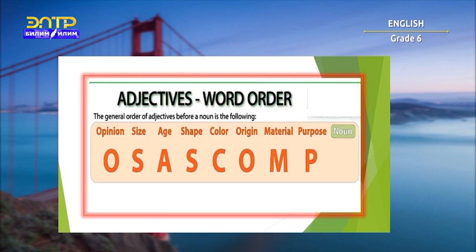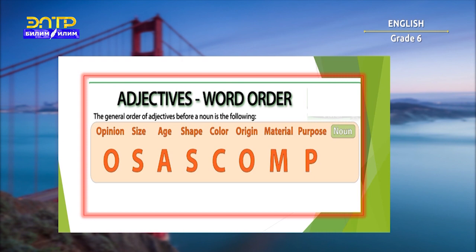So, what is the correct order of adjectives before a noun? The order of adjectives before a noun is usually the following: opinion, size, age, shape, color, origin, material, purpose. If we take the first letter of each one, it creates a mnemonic, which is an easy way to remember the order.